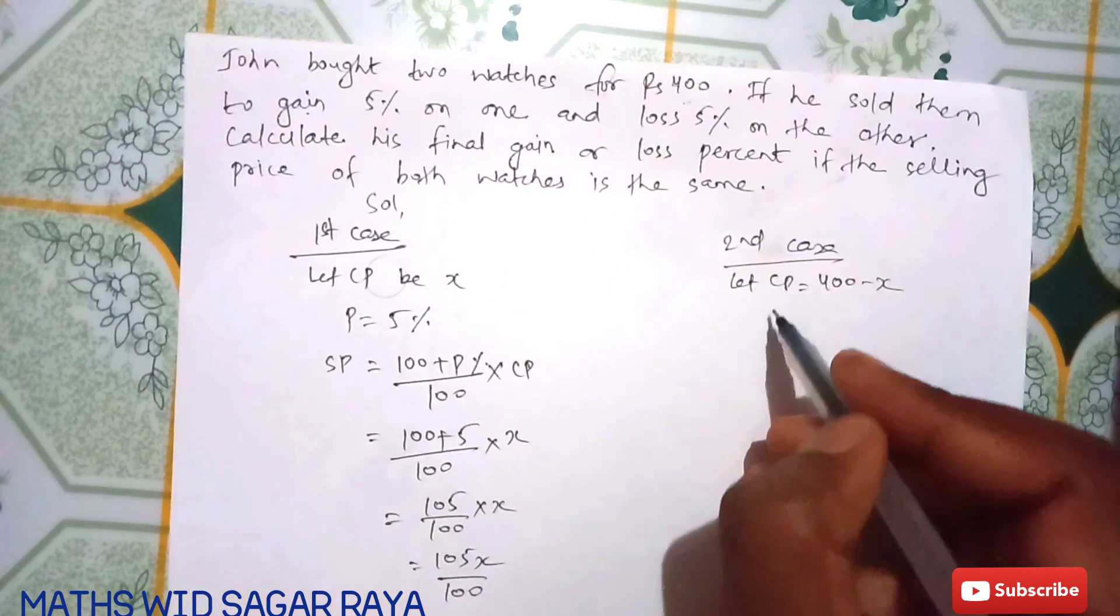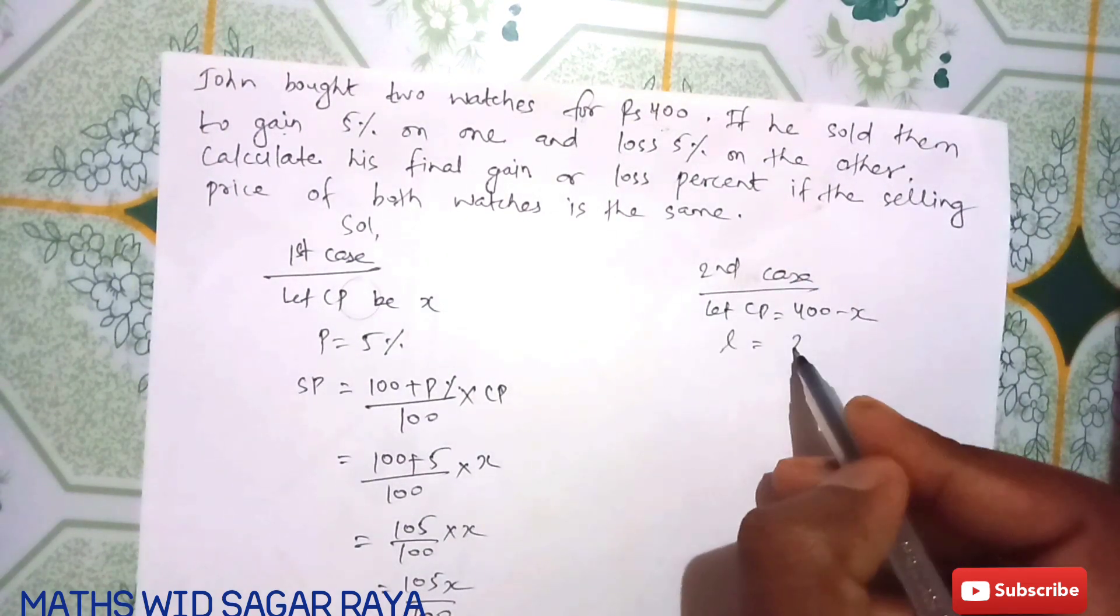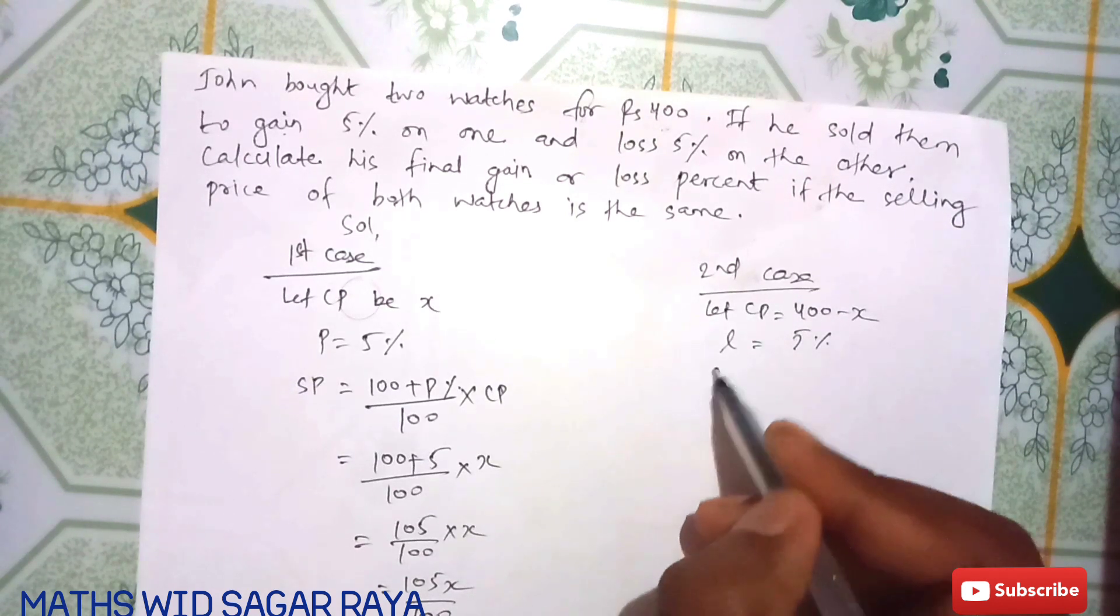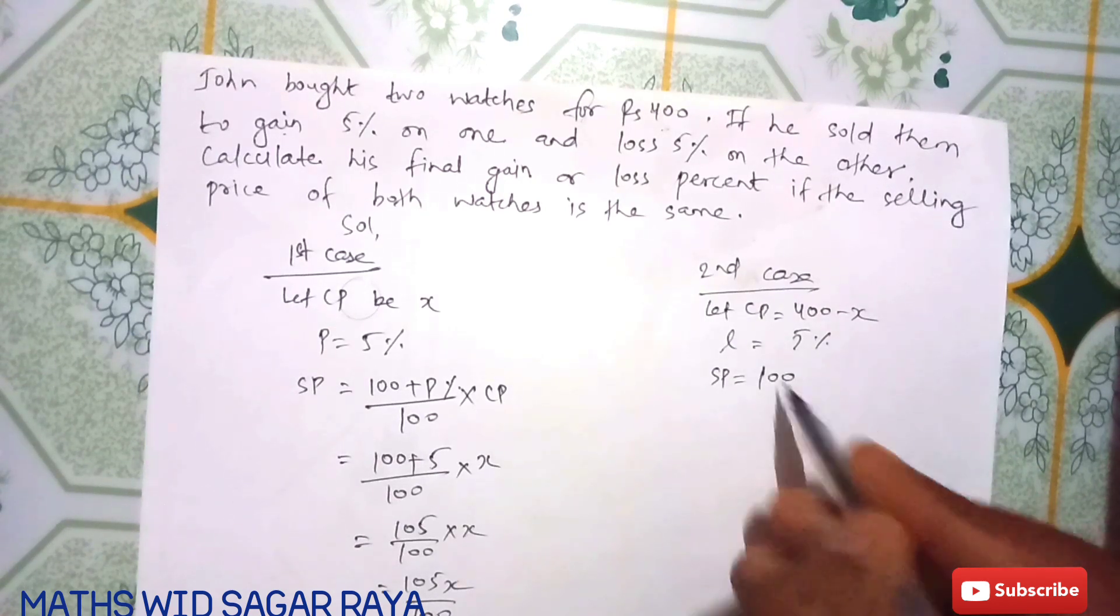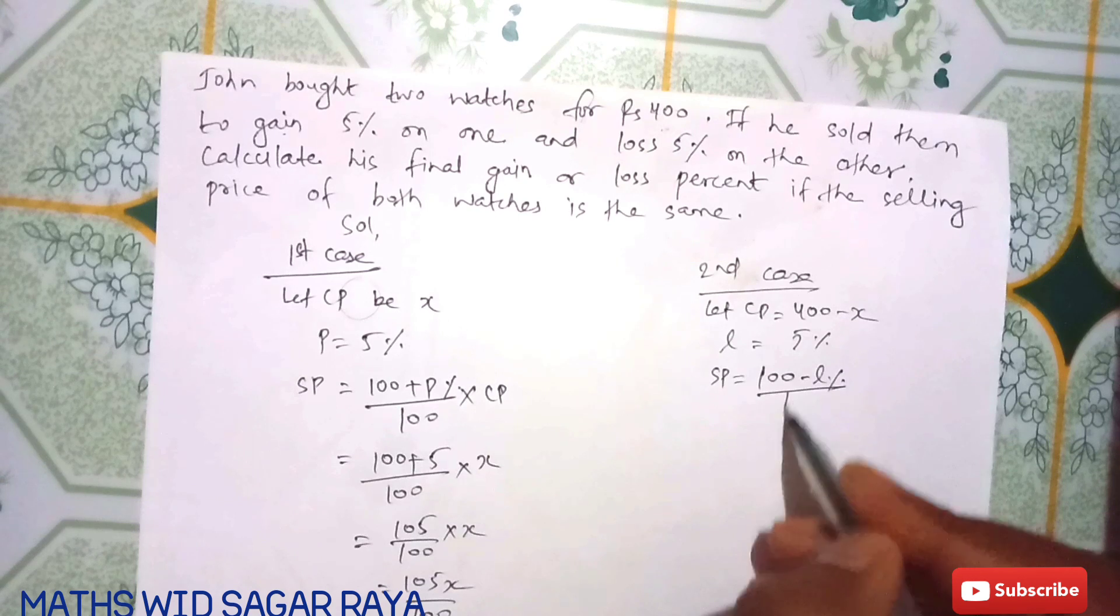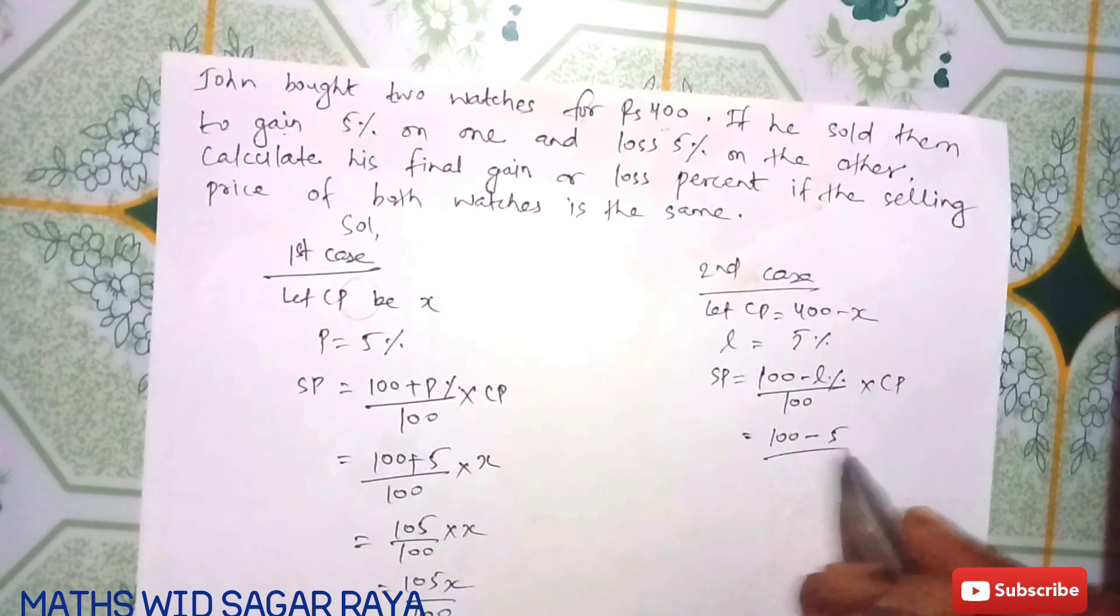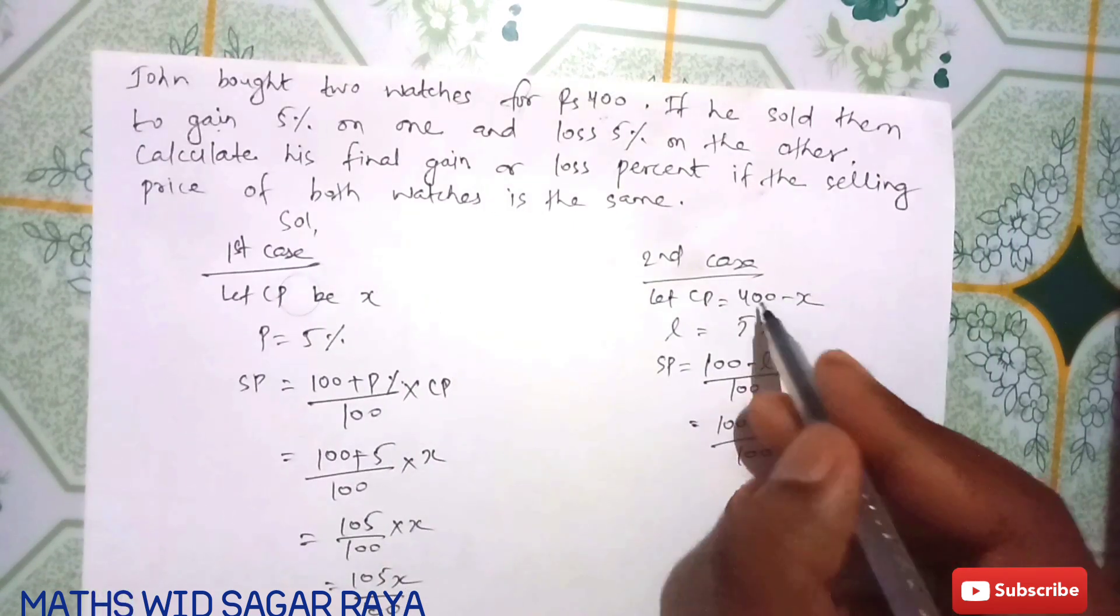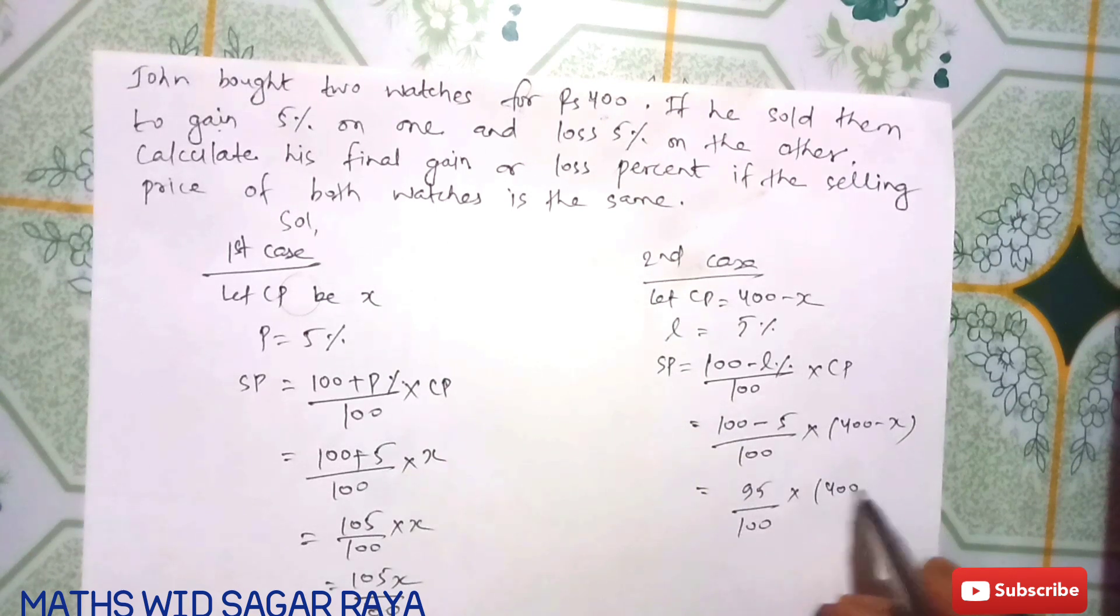Similarly, in the second case there is a loss of 5%. When CP and loss are given, the formula for SP is (100 - L%) / 100 × CP. So (100 - 5) / 100 × (400 - X) = 95(400 - X) / 100.